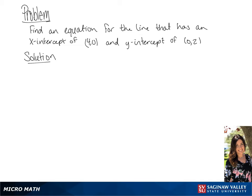We're going to find the equation for the line that has an x-intercept of (4, 0) and a y-intercept of (0, 2). First, we're going to find the slope: 2 minus 0 over 0 minus 4 equals 2 over negative 4, which gives us a slope of negative 1/2. And since we already have the y-intercept, we will have an equation of y equals negative 1/2 x plus 2.